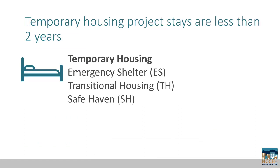Our second category of project types is temporary housing. Clients entered into temporary housing projects are considered literally homeless under HUD's definition, and our goal is to support clients to find permanent housing as quickly as possible. No safe haven projects are currently funded in North Carolina. They are temporary housing for hard-to-serve clients who reside on the streets or in places not meant for human habitation and who have severe and persistent mental illness. Specific services and resources are required to meet the safe haven definition from HUD.